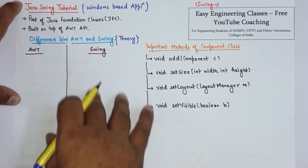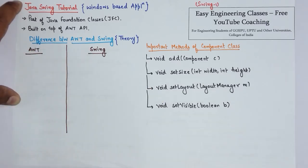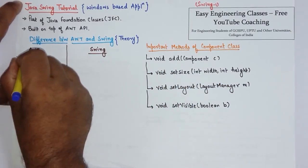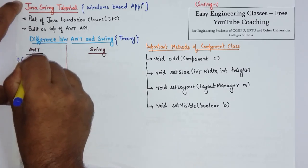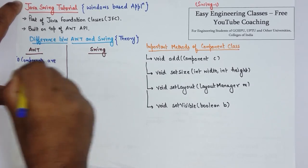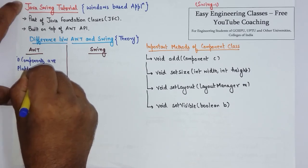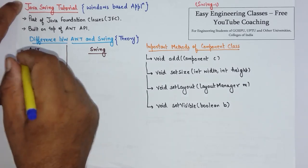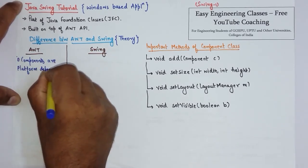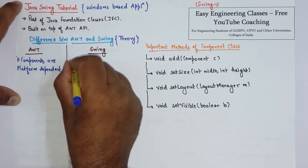Now I will write three or four differences between AWT and Swing which you can note down. First, AWT components are platform dependent. By components I mean the look and feel of AWT components like button and text field, whereas in Swing they are platform independent.